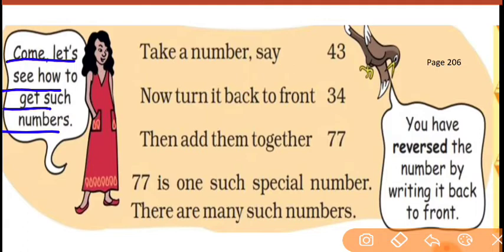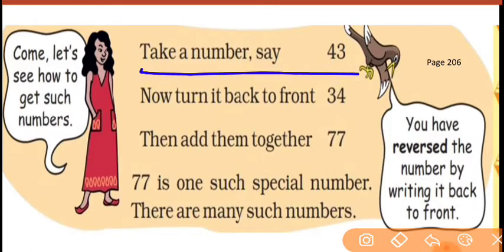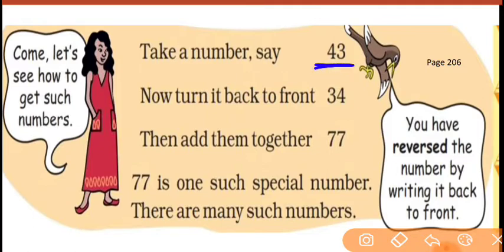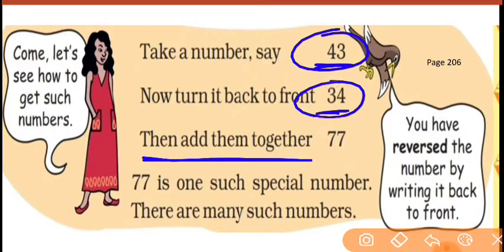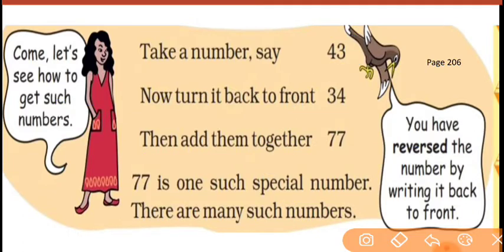You can make a palindrome number like this. Just take a number, say 43. Turn it back to front — 43 becomes 34. Now add them together: 43 plus 34 equals 77. And you know, 77 is a palindrome — backward or forward it is the same. So 77 is a palindrome. There are many such numbers.